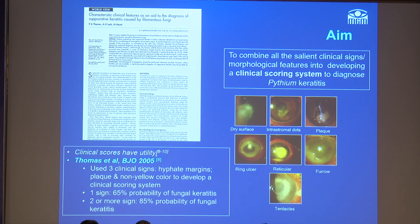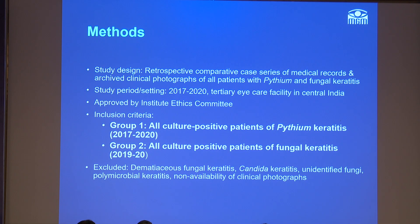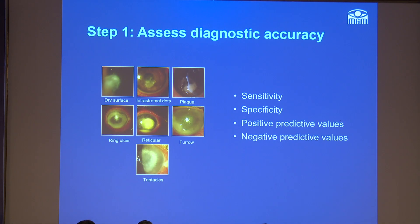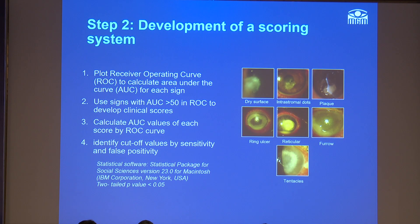So we thought of using a combination of these signs to develop a clinical score. Such a strategy has been employed in the past — Thomas Ettl from Trichy had developed a clinical score to distinguish fungal keratitis from bacterial keratitis. This is a retrospective comparative case series of medical records and archived clinical photographs. In the first part we assessed the diagnostic accuracy, and in the second part we developed the clinical score using the receiver operating characteristic curve and calculating the area under the curve.